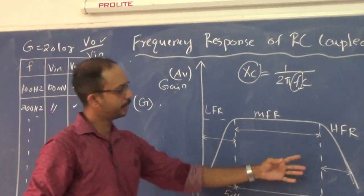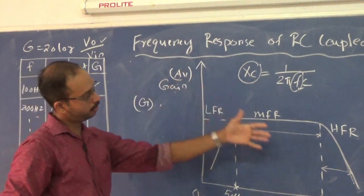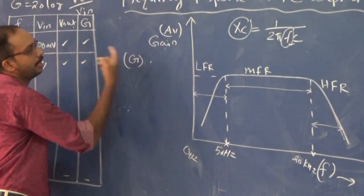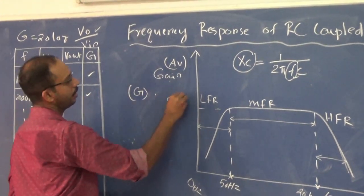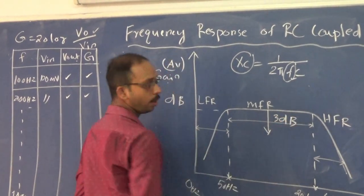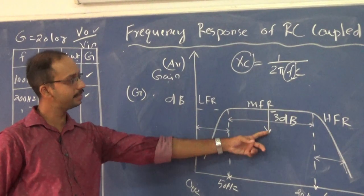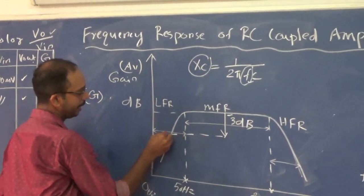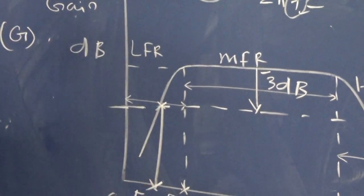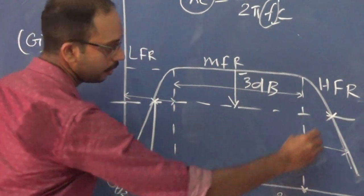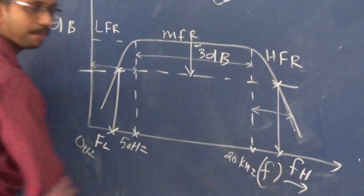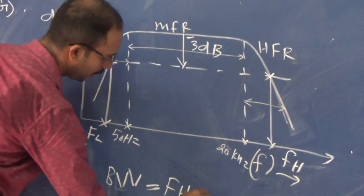From the frequency response graph we also need to calculate the bandwidth. The gain is expressed in dB on the y-axis. We take a point 3 dB down — or minus 3 dB — from the maximum value and extend a line across the graph. Where this line intersects the response curve, we get the lower cutoff frequency fl and the upper cutoff frequency fh. Bandwidth is then calculated as BW = fh − fl.